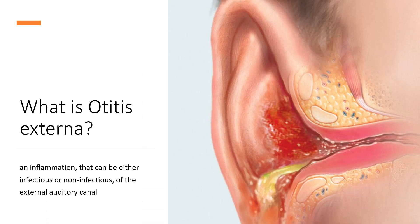Otitis externa (OE) is an inflammation — either infectious or non-infectious — of the external auditory canal. It is often referred to as swimmer's ear because repeated exposure to water can make the ear canal more vulnerable to inflammation. Otitis externa may be acute, lasting less than 6 weeks, or chronic, lasting more than 3 months. Acute cases are typically due to bacterial infection, and chronic cases are often due to allergies and autoimmune disorders.